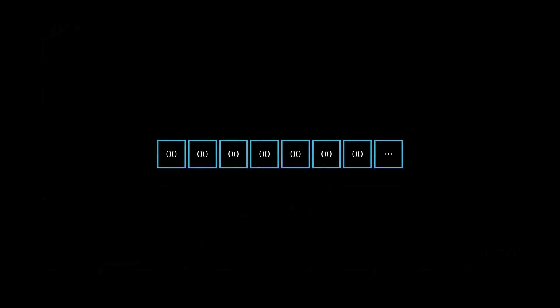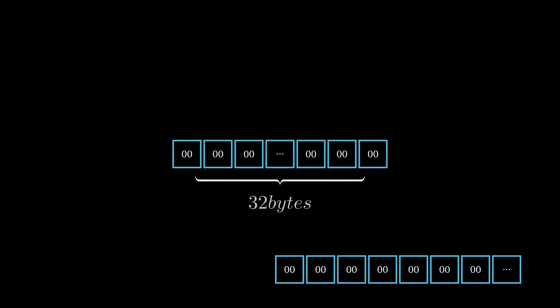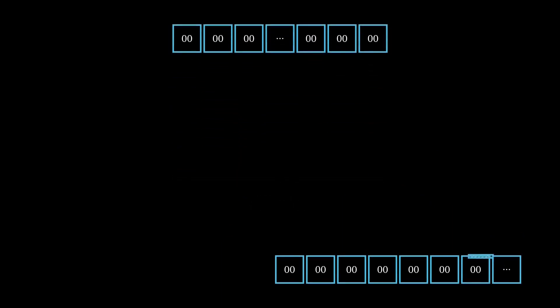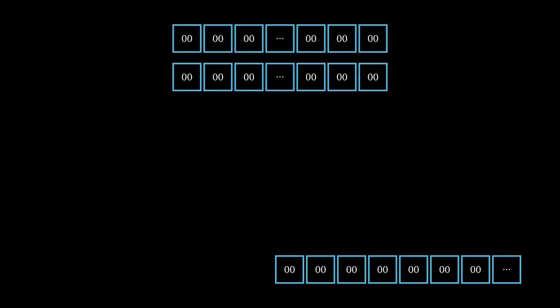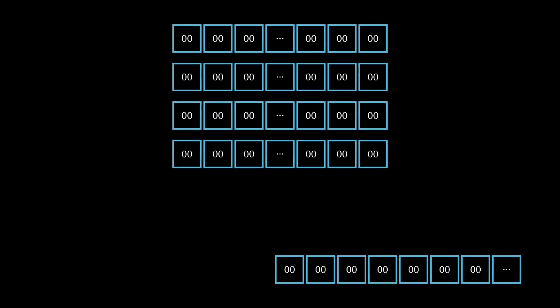Almost all operations to read and write from memory happen in chunks of 32 bytes. Oftentimes when you're reading through documentation on EVM memory, you'll see that memory is arranged in chunks of 32 bytes.